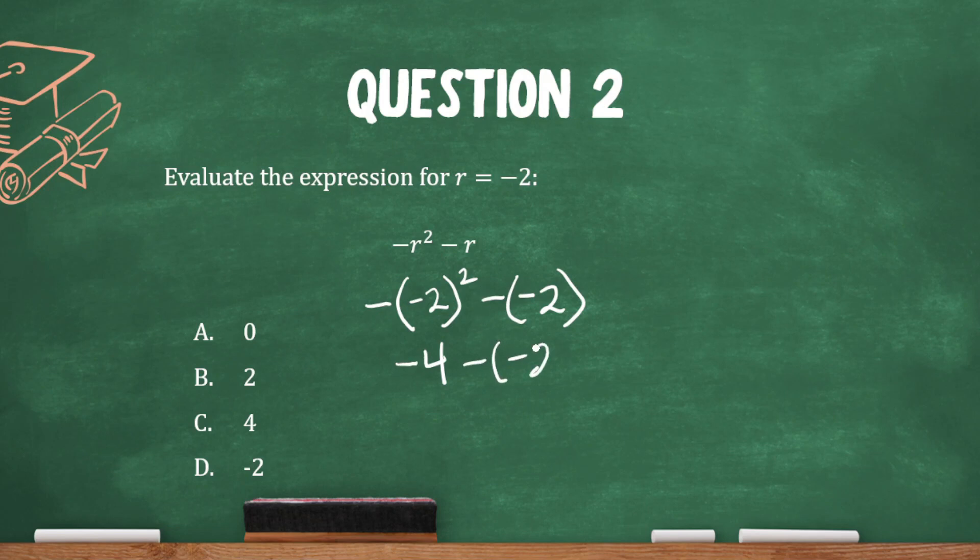And now we just have subtraction left. Negative 4 minus negative 2. Now minus and negative means plus. So this is the same thing as negative 4 plus 2. And that is negative 2.